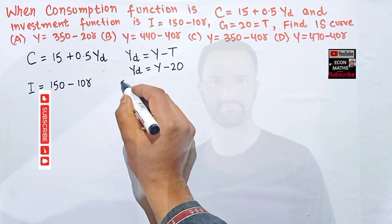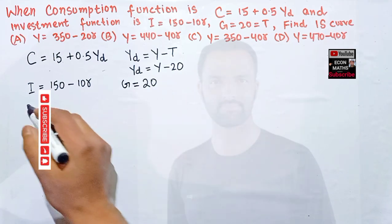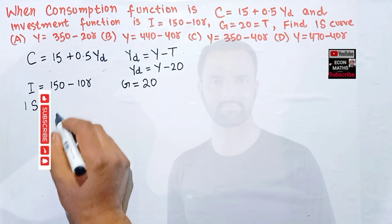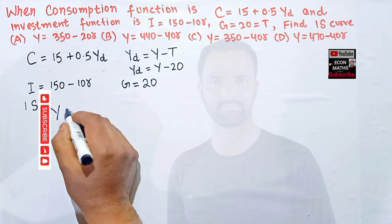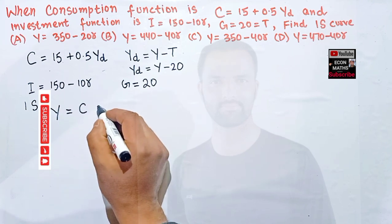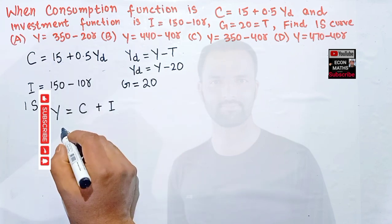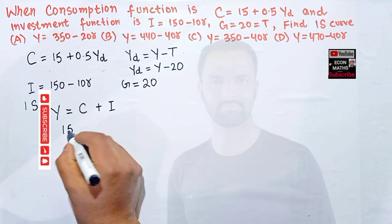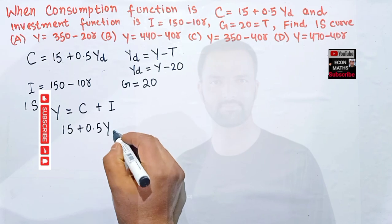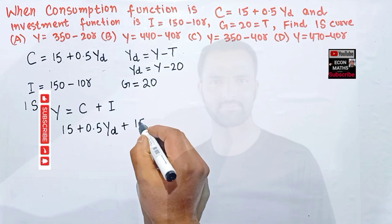Government expenditure is also given as G = 20. To find the IS curve, we write the GDP identity: Y = C + I + G. Substituting our consumption function, we get Y = 15 + 0.5 Y_d + 150 - 10r.